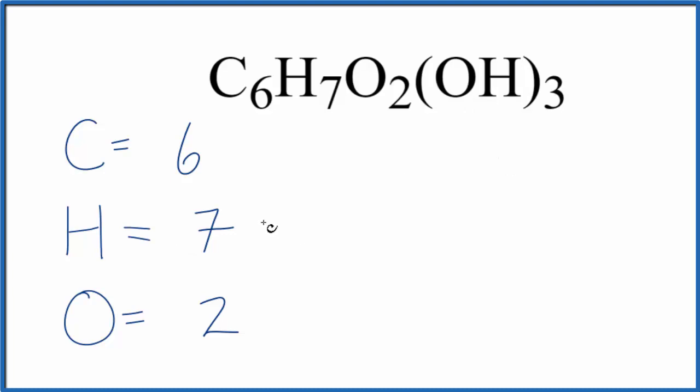So let's do hydrogen. We have three times one. That gives us three more hydrogen atoms, total of 10 hydrogen atoms, three times the one for the oxygen. So we have three more of those, five.